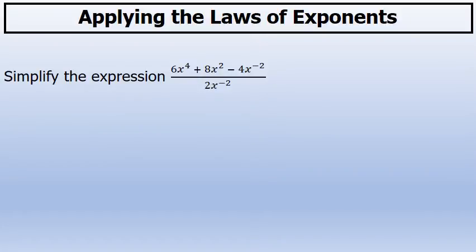Simplify the expression 6x to the fourth plus 8x squared minus 4x to the negative two power all over 2x to the negative two power.